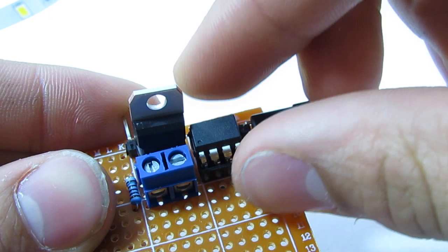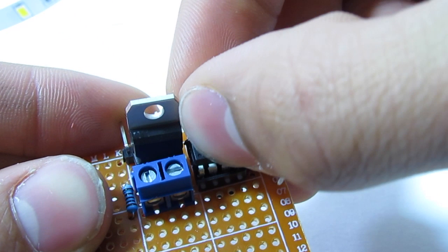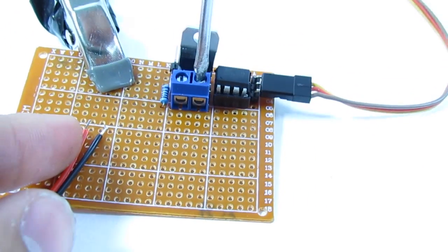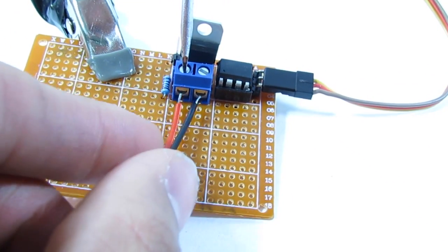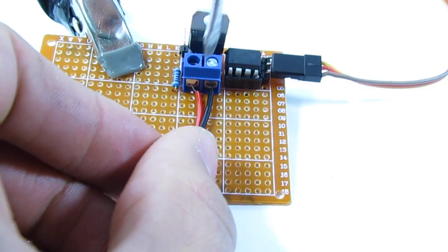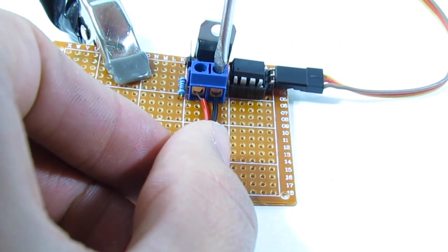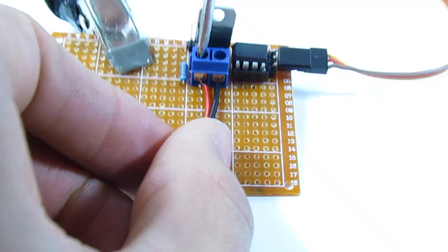Now press the ATtiny into its socket and make sure that the notch is facing towards the transistor. Now screw down the positive and negative wires coming from your LED strips to the corresponding terminals on the screw terminal. If you're unsure which is positive or negative, always use a multimeter.